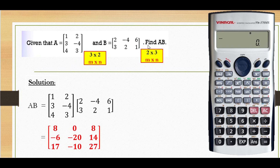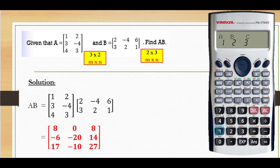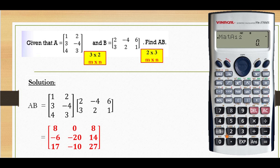Given matrix A and matrix B, find matrix A multiplied with matrix B. First, press mode until you see MAT, number 2. Then press shift 4, DIM, number 1. Press number 1 to key in matrix A. M is the row for matrix A — 3. N is the column for matrix A — 2. Element 1,1 is 1. Element 1,2 is 2. Element 2,1 is 3. Element 2,2 is negative 4. Then 3,1 is 4 and 3,2 is 3.